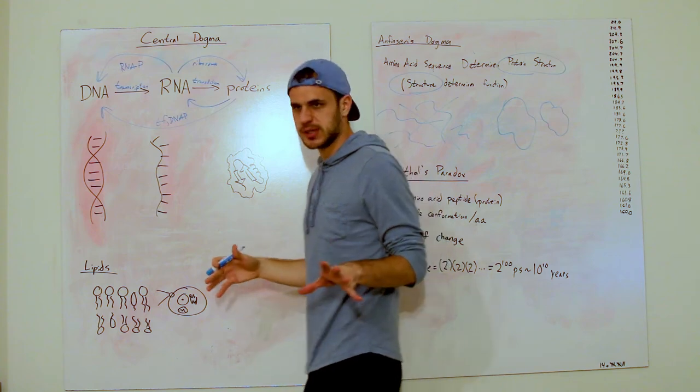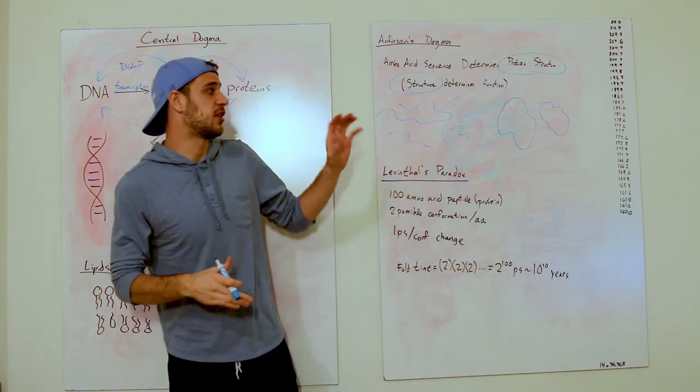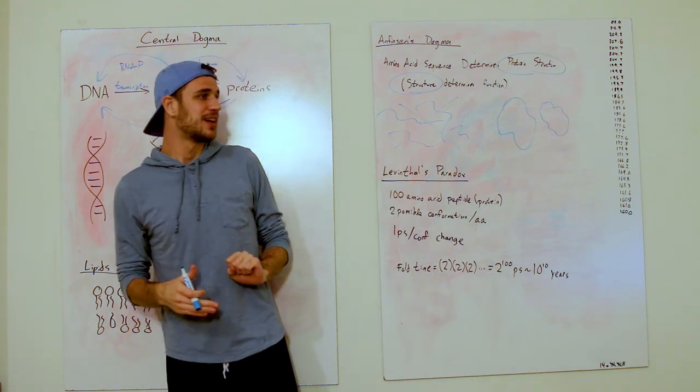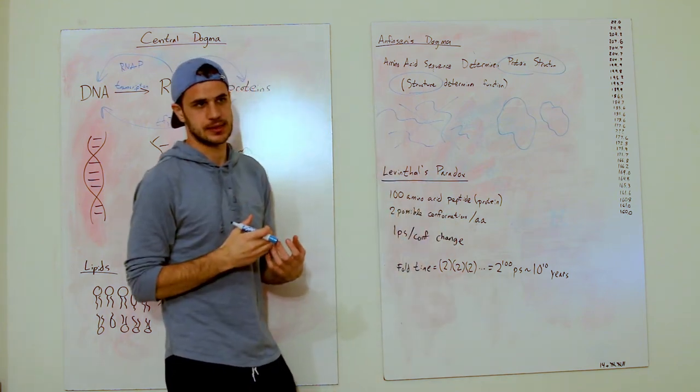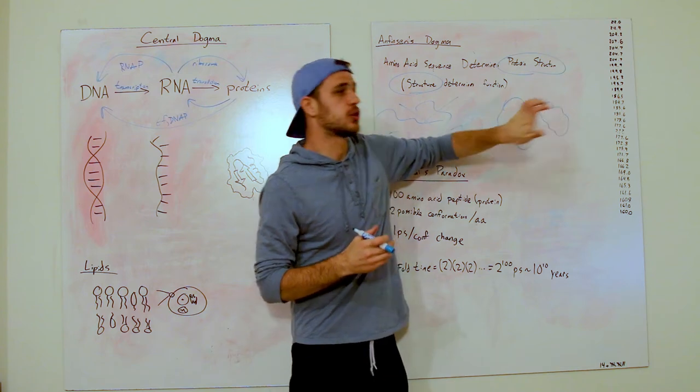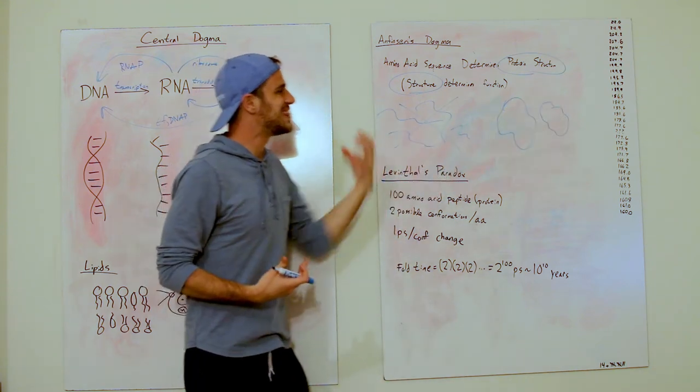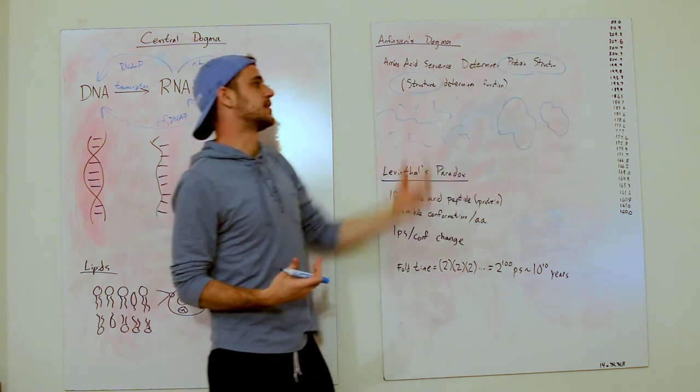Such that they have a very defined structure in wiggliness. These specific structures allow it to perform its function. This is the power of Anfinsen's Dogma. Proteins have a structure.